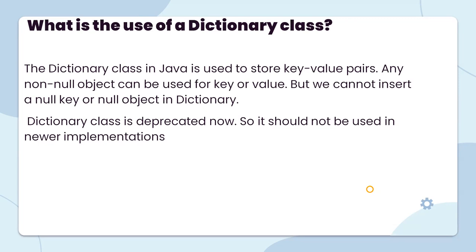What is the use of the Dictionary class? The Dictionary class in Java is used to store key-value pairs. Any non-null object can be used as a key or value, but we cannot insert a null key or null value in Dictionary. The Dictionary class is now deprecated, so it should never be implemented.